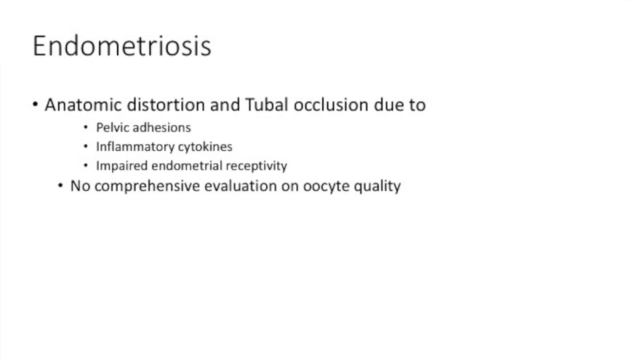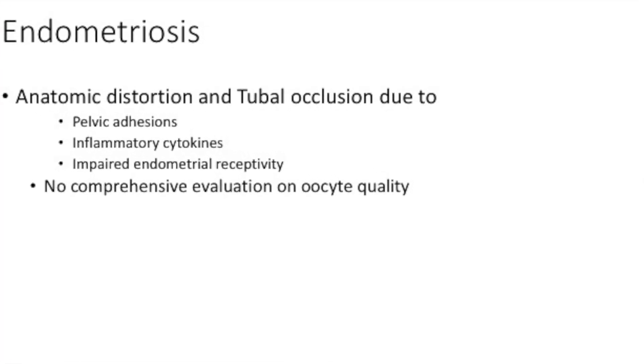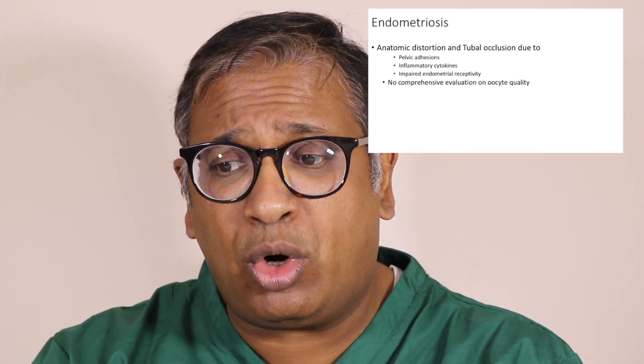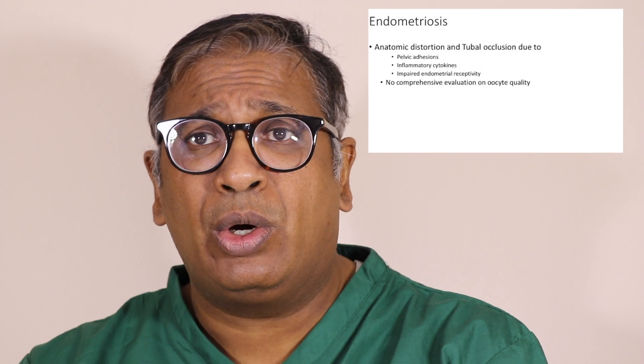This is an extremely good article which gives us an idea about how we are approaching the subject of endometriosis. What does endometriosis do? It causes anatomic distortion and tubal occlusion at times due to pelvic adhesions, inflammatory cytokines, and impaired endometrial receptivity. There is no comprehensive evaluation on oocyte quality — we just don't know whether oocytes are affected.